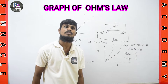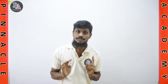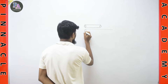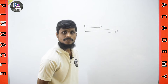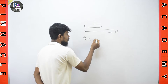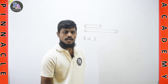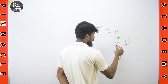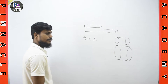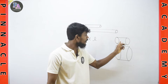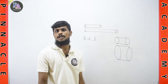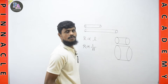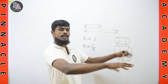Now let's go to resistivity and conductance. The resistance is directly proportional to the length of the conductor, and inversely proportional to its cross-sectional area. The same material — whether copper, gold, or aluminum — with the same length and area will have the same resistance. A longer conductor has more resistance; a wider cross-sectional area allows more electron flow, reducing resistance.